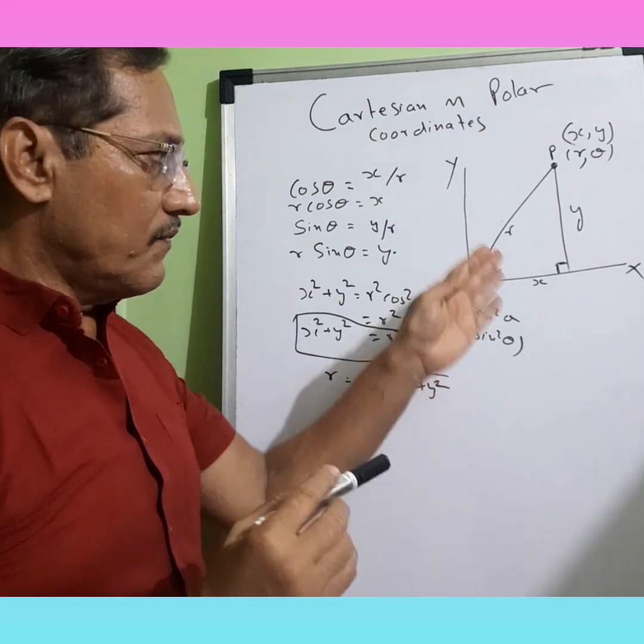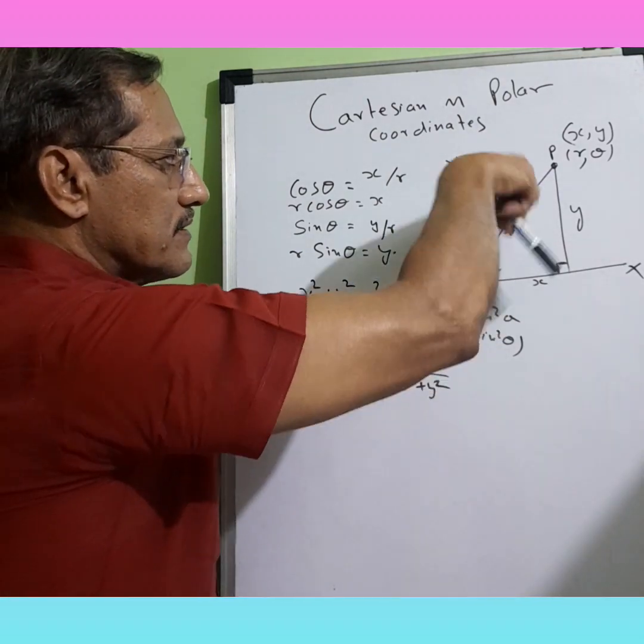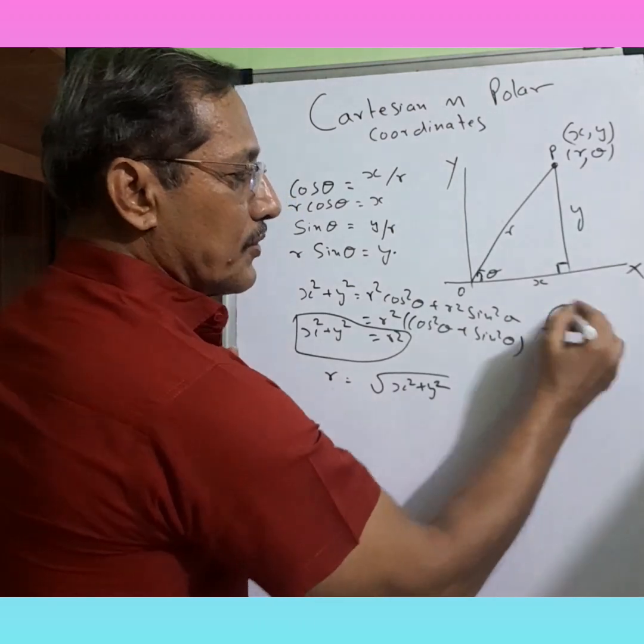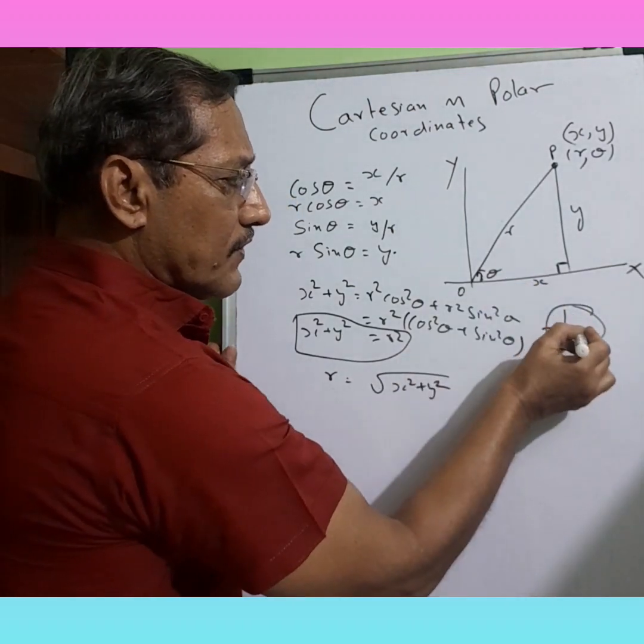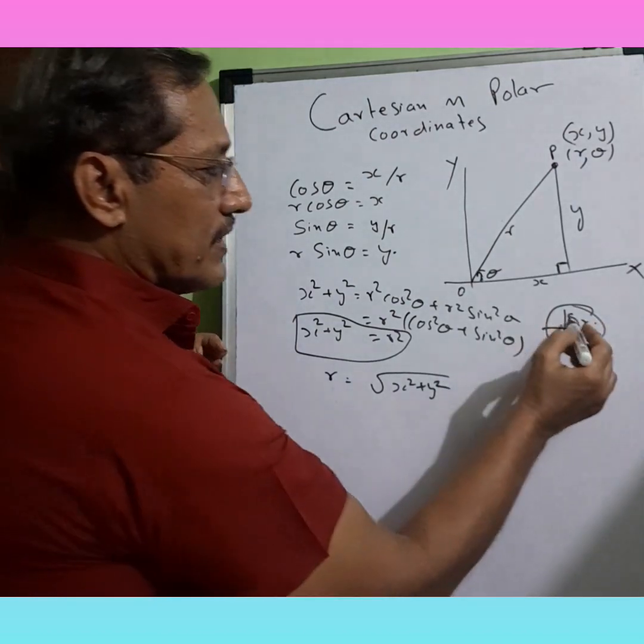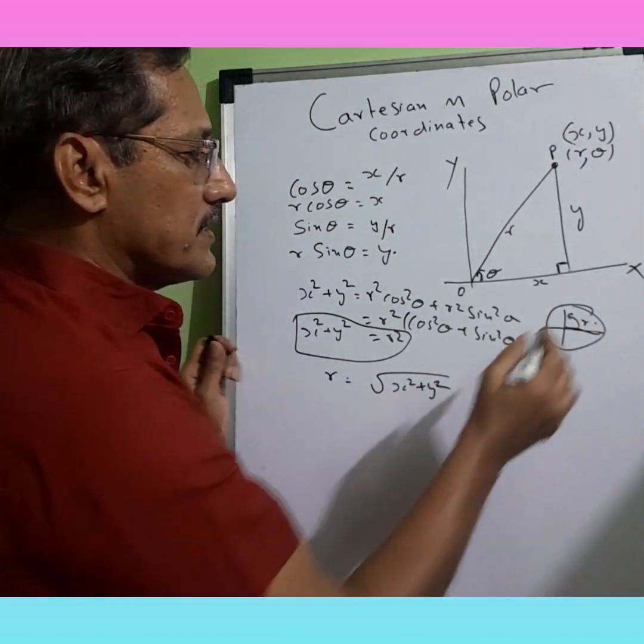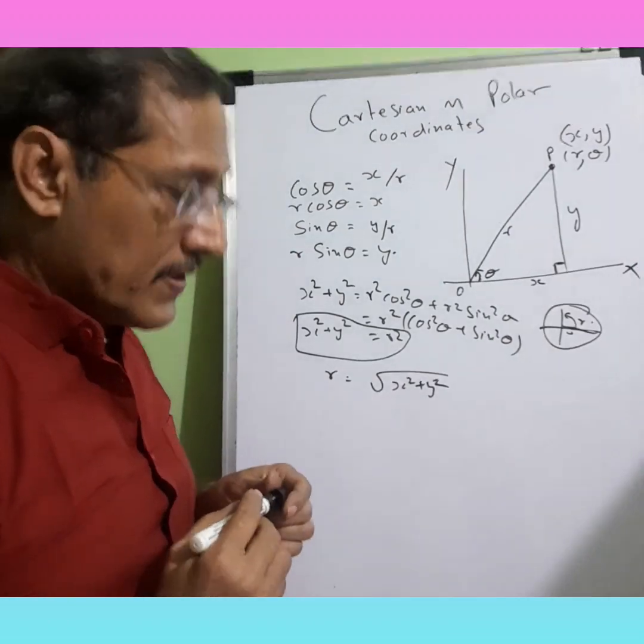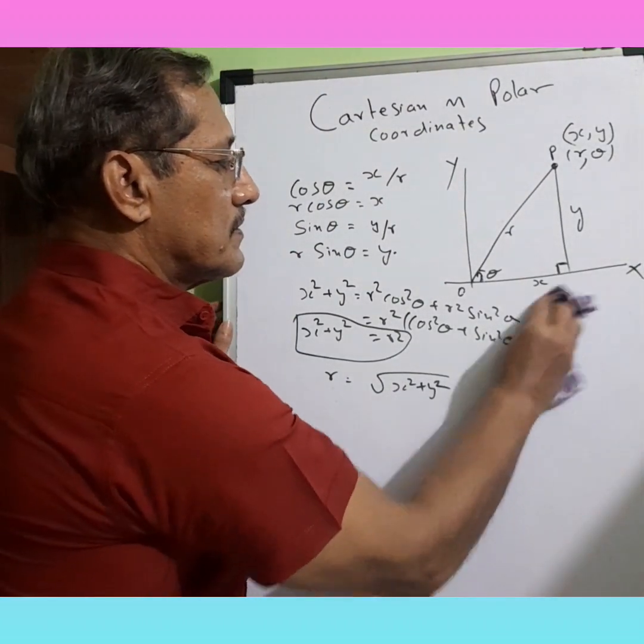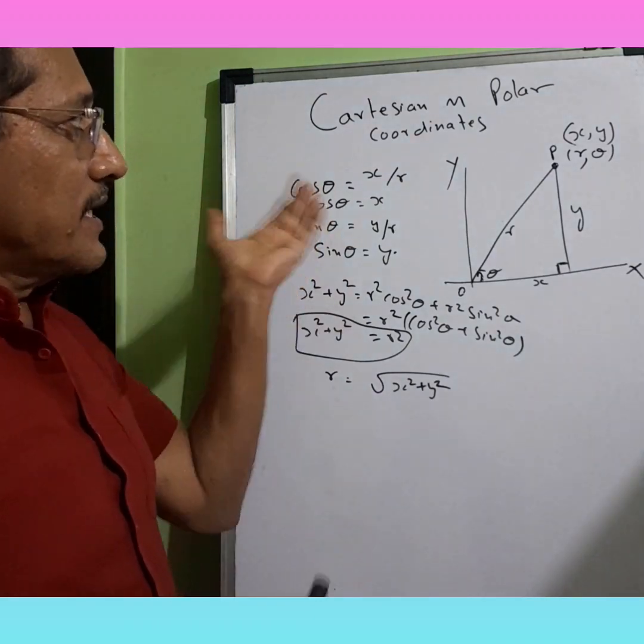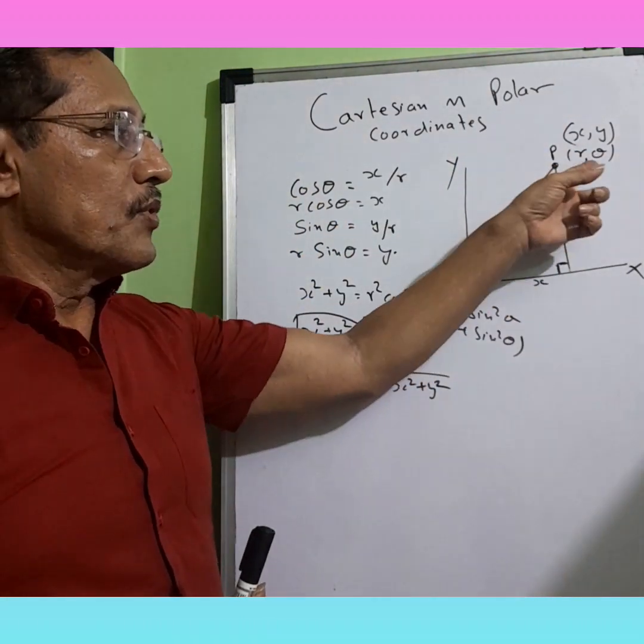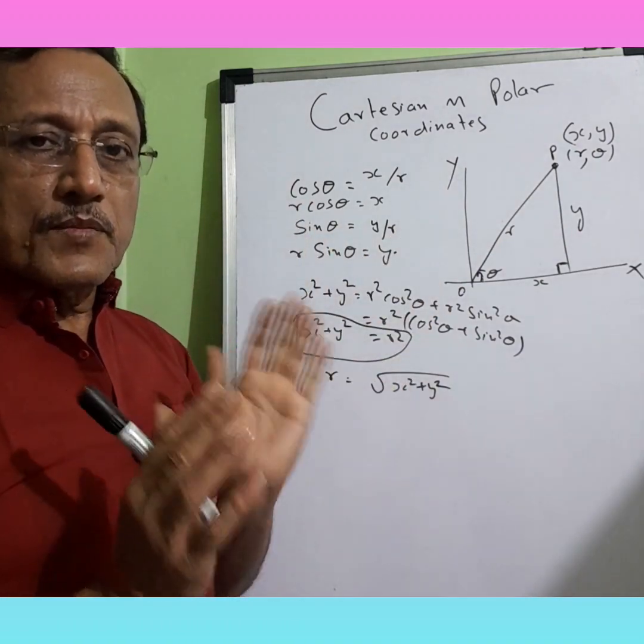Normally R we use as a radius. We know whenever, as I taught you in a circle, we always move this way and this is the radius, this is the center. So that's the relationship. That's about Cartesian coordinate, polar coordinate, and relation between them.